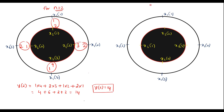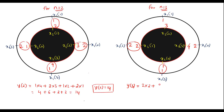For n=3, the outer circle x1[n] is kept as is, and x2[n] is rotated by 1 more unit anticlockwise, giving: x2[0]=1, x2[3]=4, x2[2]=3, x2[1]=2. Multiplying: 2×2 + 1×1 + 4×2 + 1×3 = 4+1+8+3 = 16. Therefore y[3] = 16.